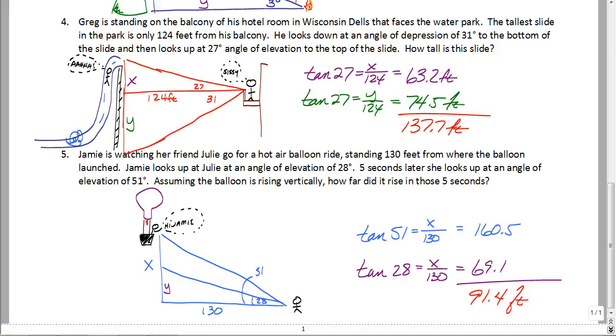Now, in number five, you had to take the total height by finding the tangent of 51, and that'll give you the height of 160.5. But then you have to remember it was originally at 28 degrees. So you have to go back and find that, which is 69.1. But you subtract this time because we know the total height right now is 160.5. We just want to know how much further did it rise from this location to that location over a five-second period, and it was 91.4 feet.